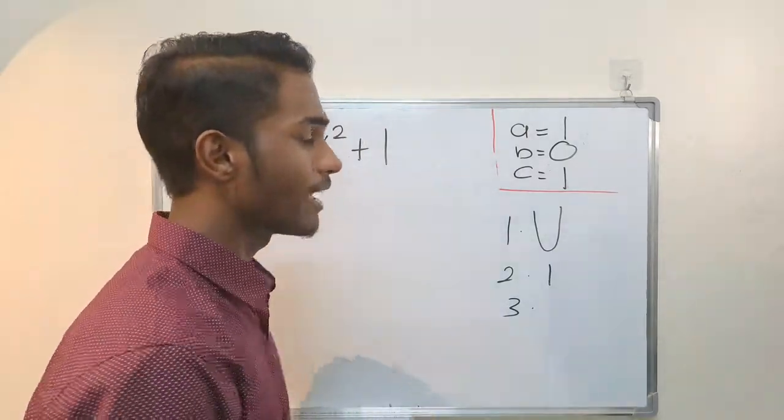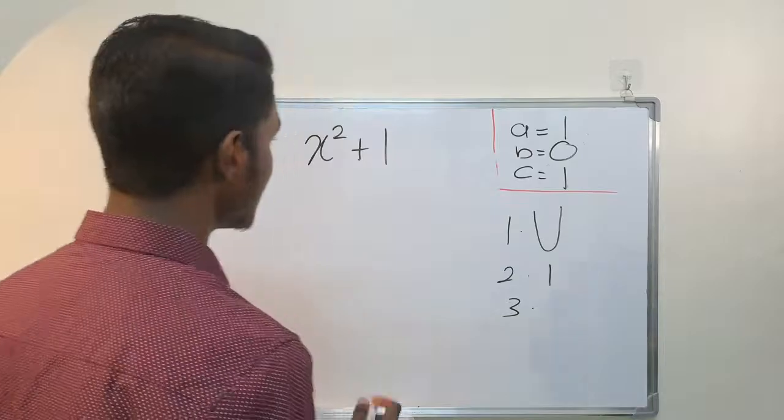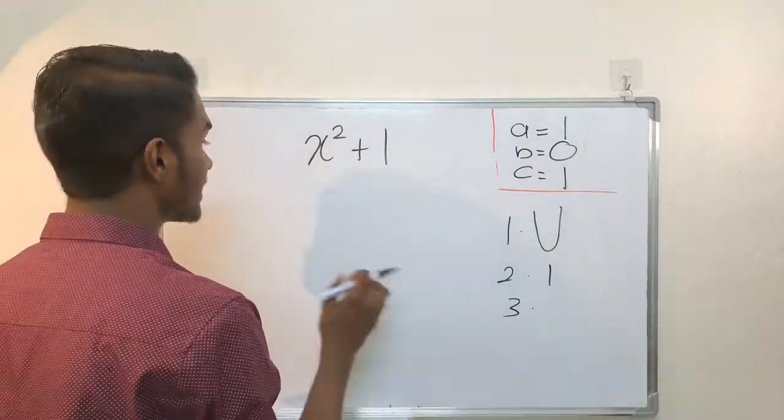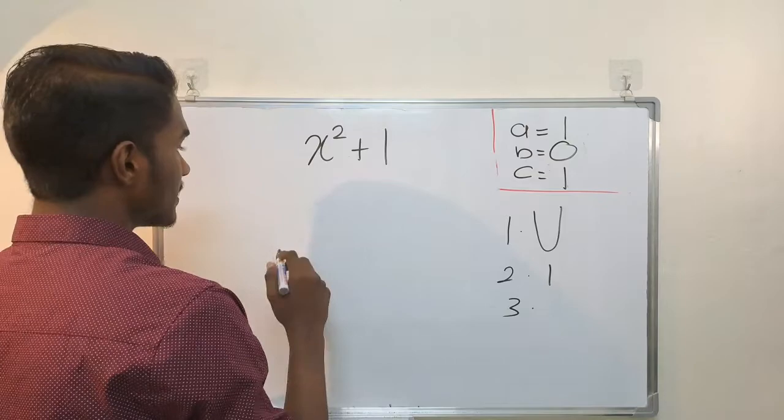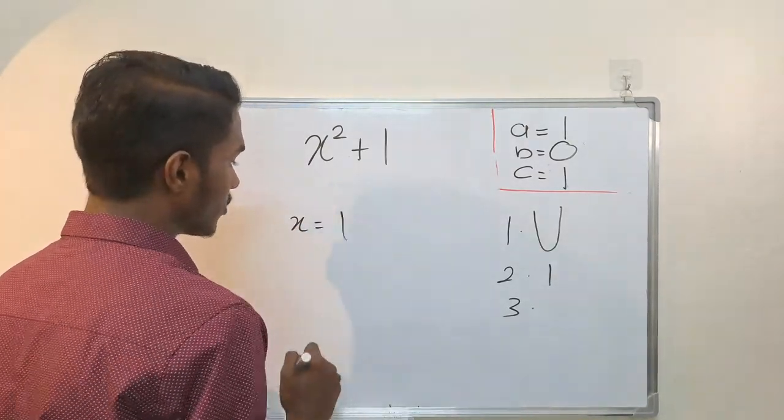The a value is 1, positive. The y-intercept, the c value, is 1. Now for the x-intercepts, if we factor, this equation cannot be factored easily.